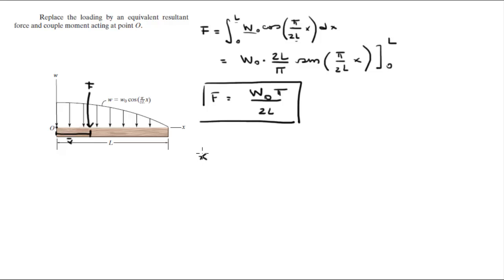Now we need to find X-bar. X-bar is given by X times the function, which is W0 cosine of pi over 2L X dx from 0 to L. Same function, just multiply by X. And the bottom is still the same which we already found. Let's put F, the force, just so we don't have so many letters on the screen.